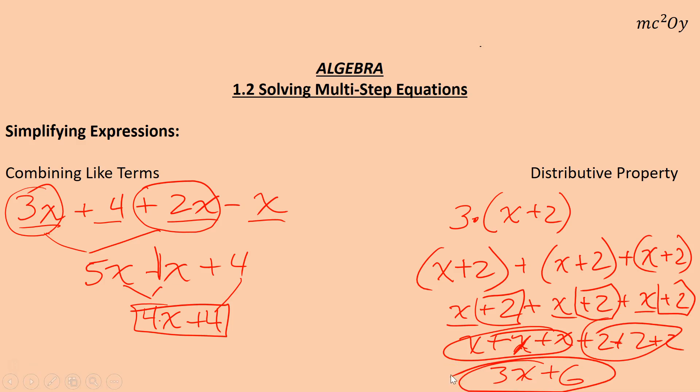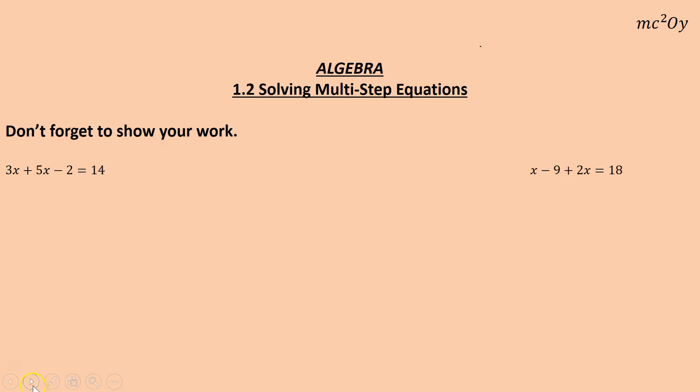So distributive property, the quick way to get there is just going 3 times x, that gives me the 3x. Then 3 times 2, which gives me the 6. Notice I have 3 x's and 3 2's. That's the quick method.